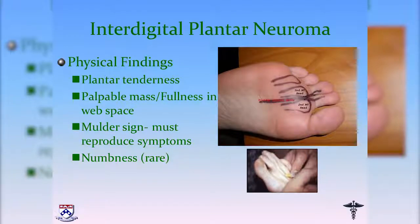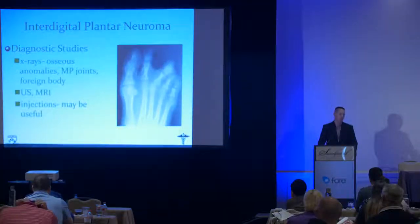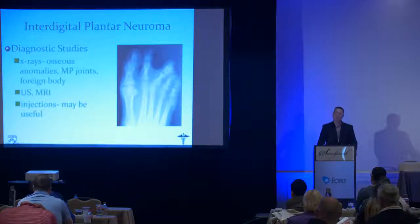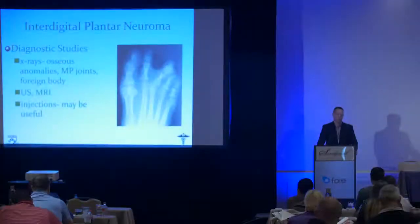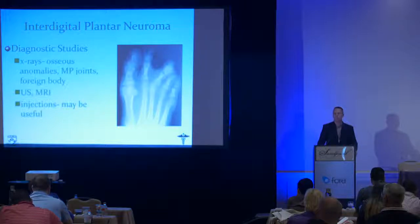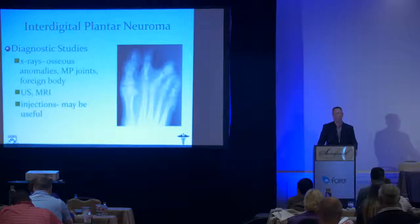For diagnostic studies, start with x-rays to look for associated pathology such as metatarsophalangeal joint instability — notably, multiple cortisone injections can weaken collateral ligaments and cause toe deformities. Ultrasound and MRI can confirm the neuroma. A selective injection can be diagnostic with just lidocaine; ultrasound-guided injection is preferred as it allows precise targeting of the nerve with a small volume.